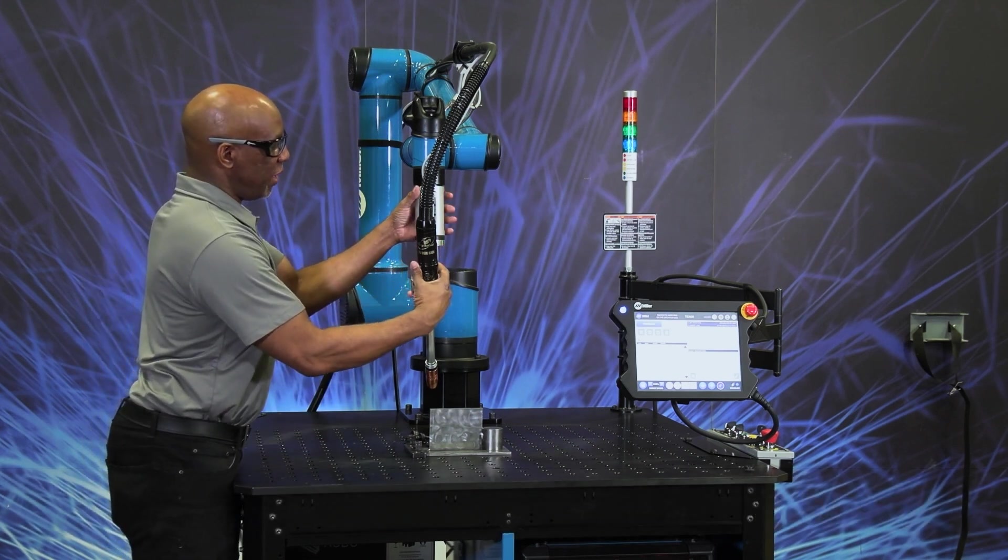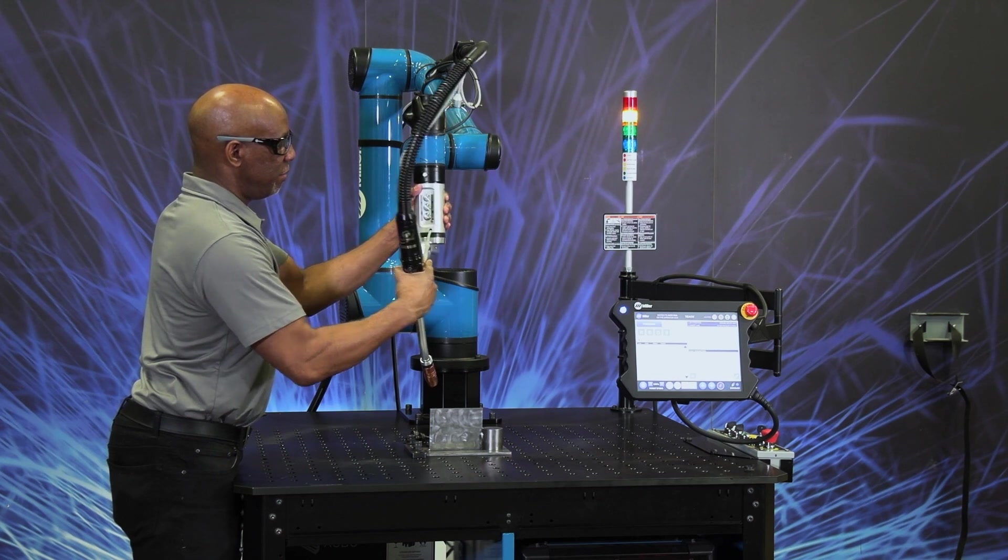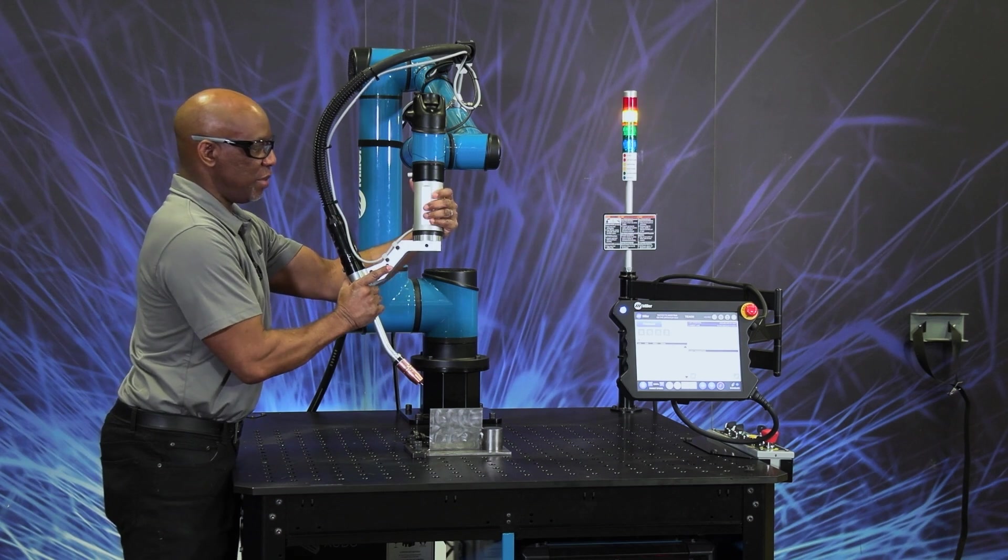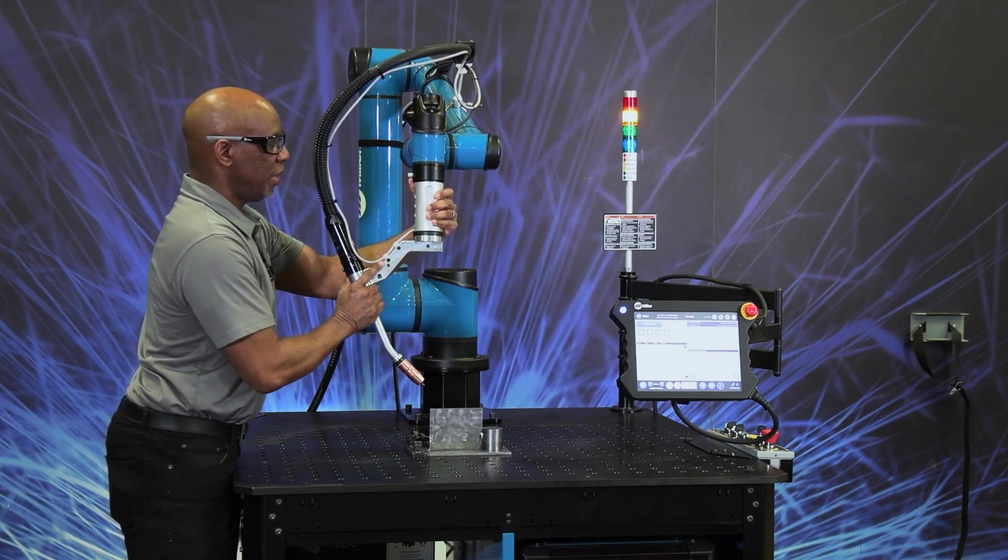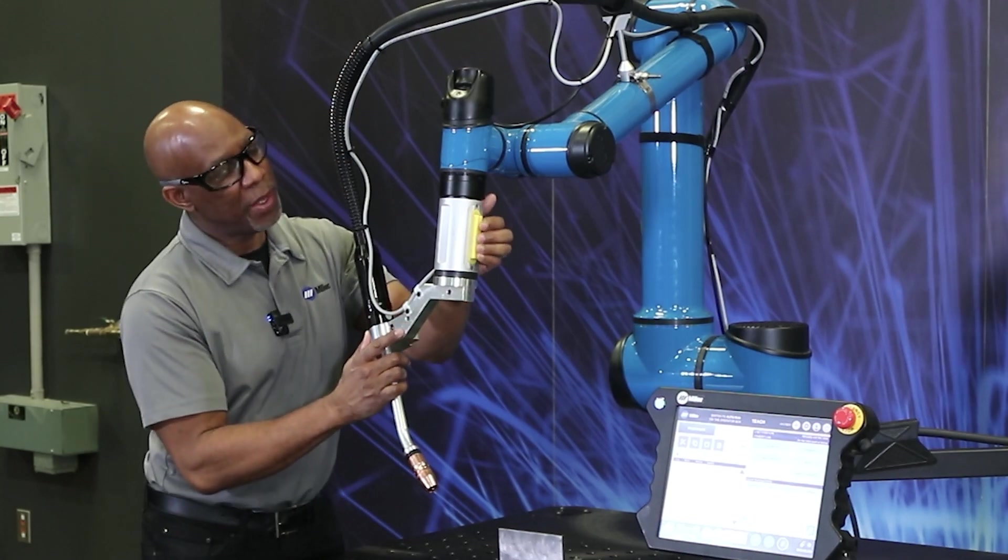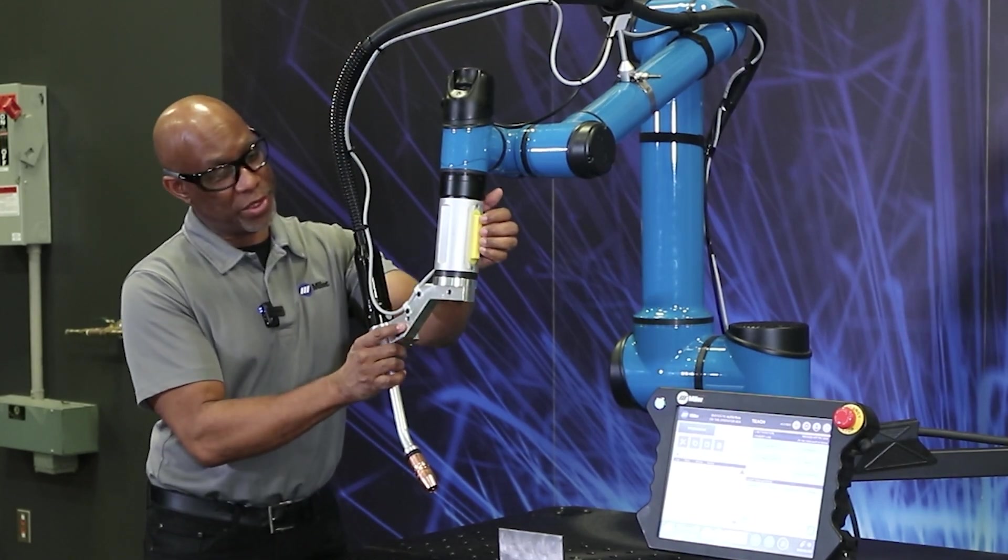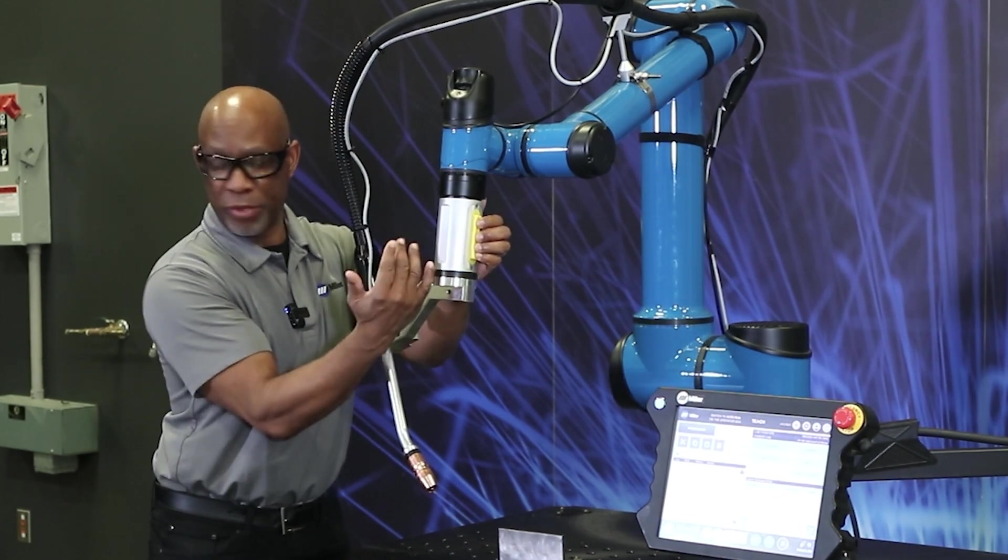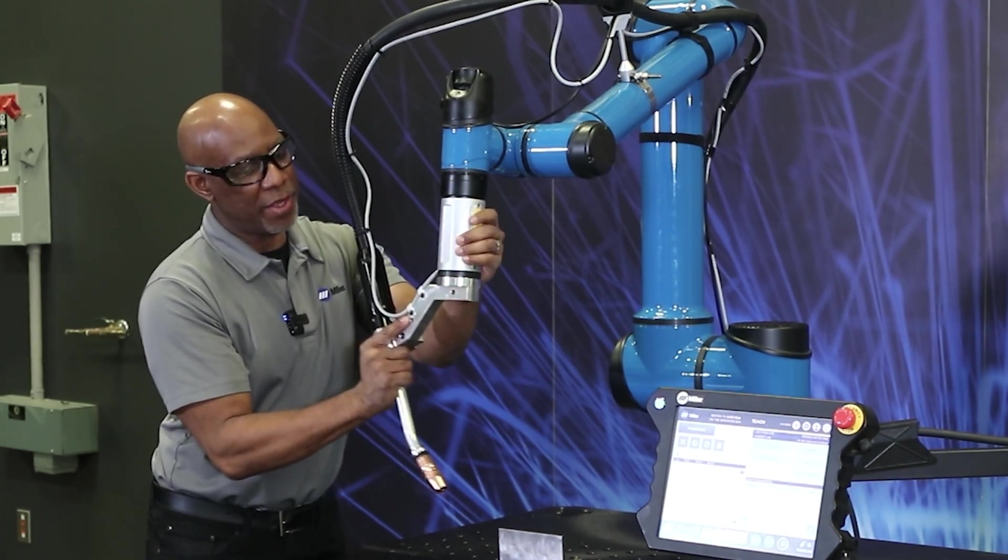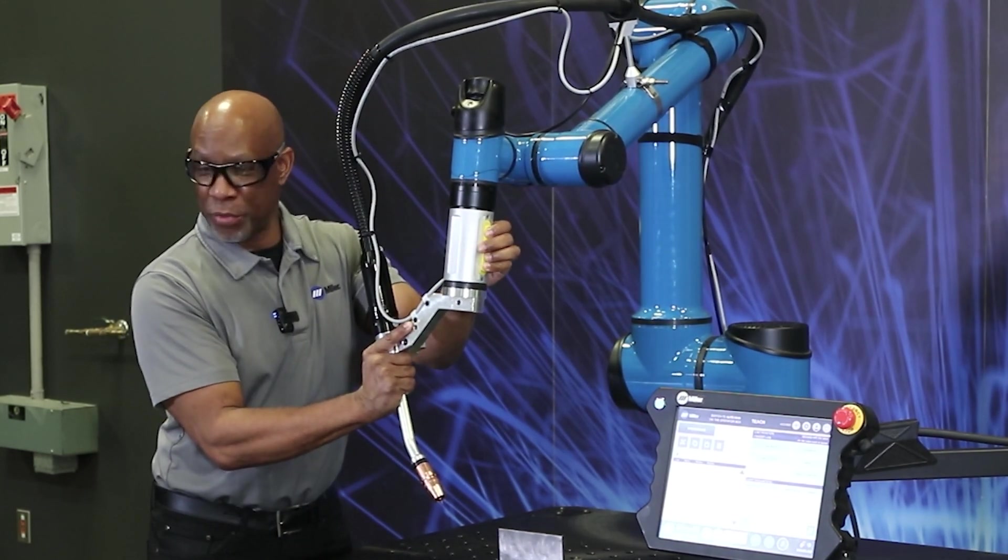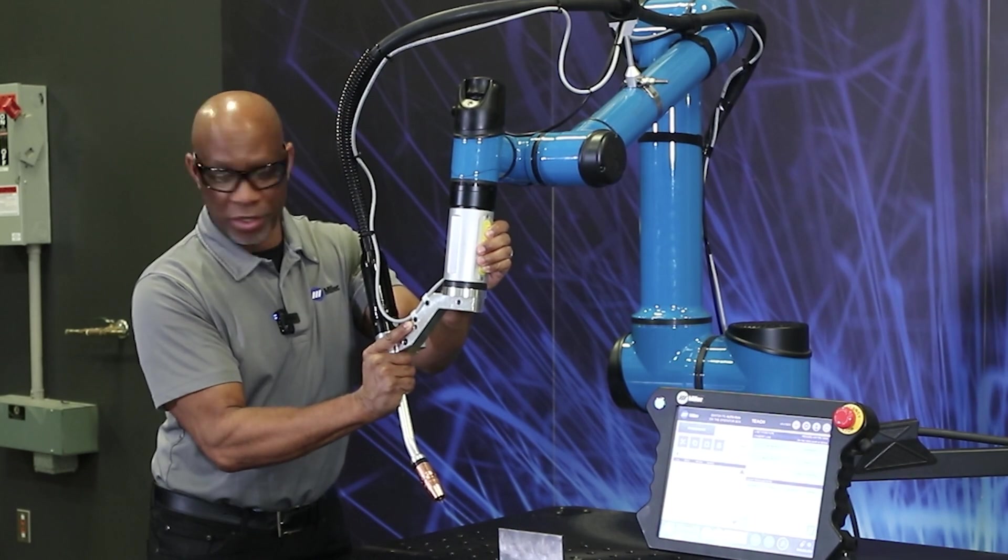The free drive is the operator setting the enabler switch and then physically moving the Cobot. Now to do this, we have this enabler switch on the back. This is a three-position switch. If you press halfway down, you'll feel some resistance that will allow you to move it. You press all the way in and it locks the Cobot.